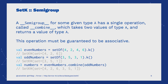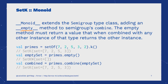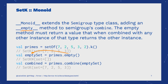We can define Monoids as combinable objects that have an empty value, which functions as an identity. In our code snippet, we can check that by calling the empty method, we will receive a SetK with no inner values. And then, when combining it with a SetK, the same SetK will be returned.